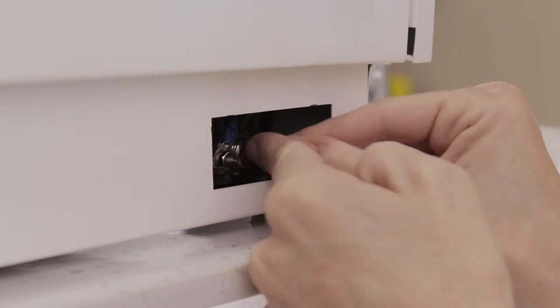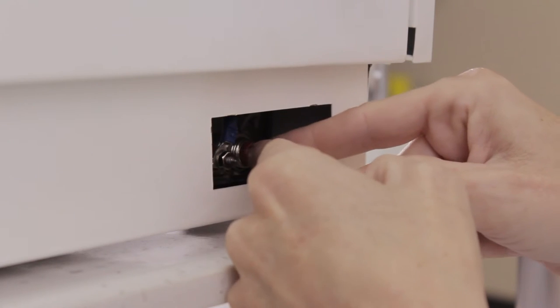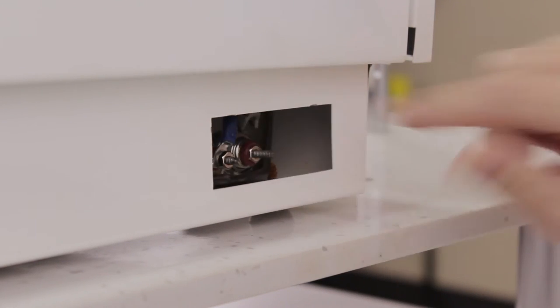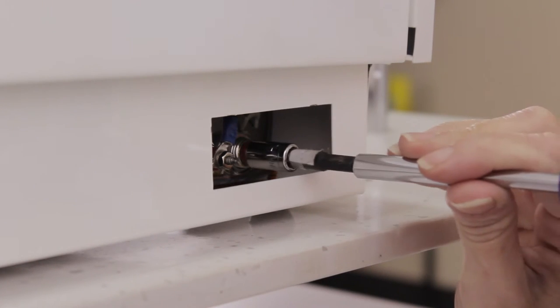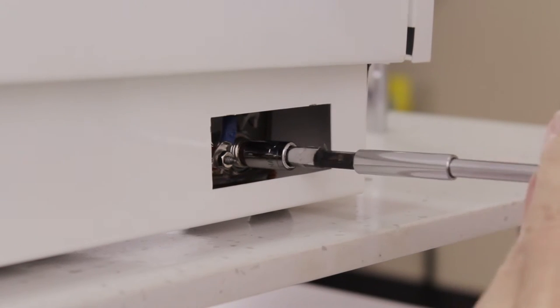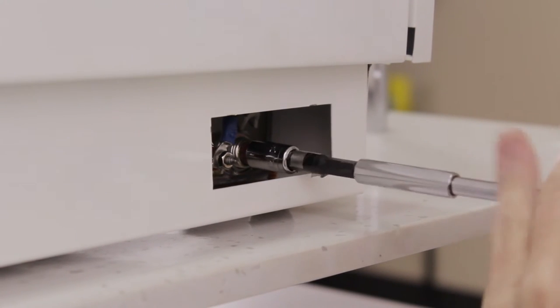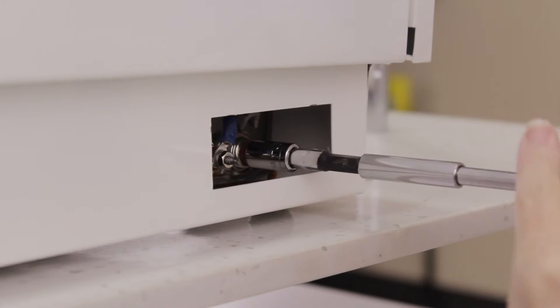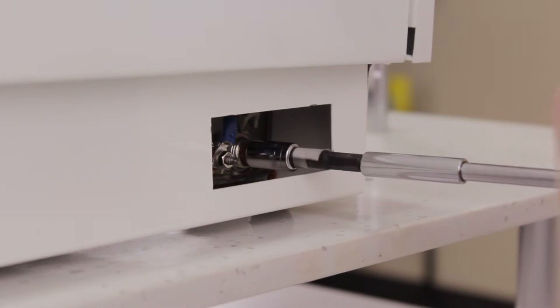Don't be concerned if you mix up these terminals, the fork terminals that are in here. It does not matter which side they are on. They will work on both sides. So again, using the same socket, remove the smaller screw. You're going to do this for both sides.